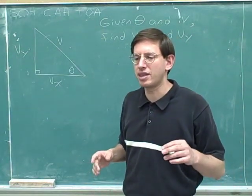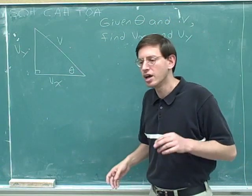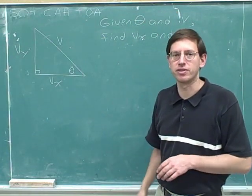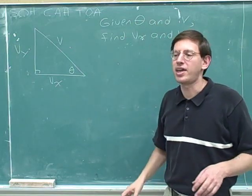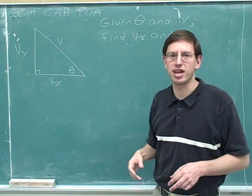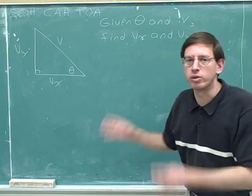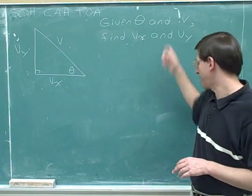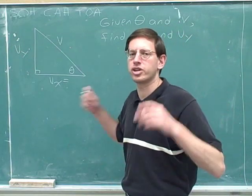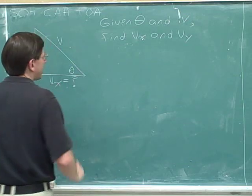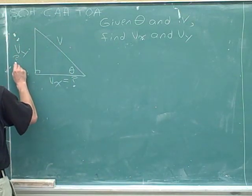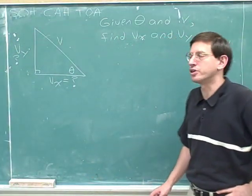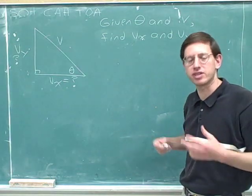It might seem a little weird to say that we were given that information because we weren't actually given numbers. But the convention in physics is that if the problem tells us we're given theta and v, we should pretend that we have numbers for those variables. We're going to pretend that we have numbers for theta and v, but we're not going to pretend that we have numbers for v sub x and v sub y — that's what we're trying to figure out.